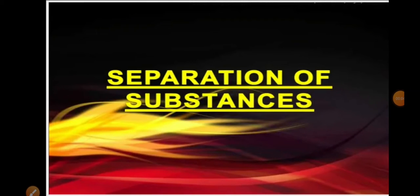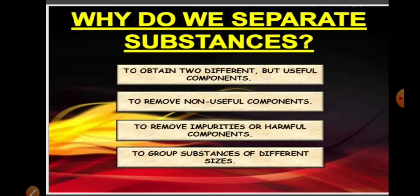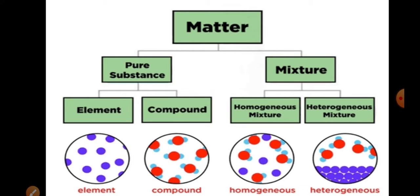Namaste children. We are in the chapter on separation of substances. In our previous class we studied what is matter and its different forms. Matter is anything which has mass and can occupy space. Matter can exist in two different forms: as pure substances and as mixtures. Mixtures are formed by the combination of two or more different substances, either chemically or physically combined together.